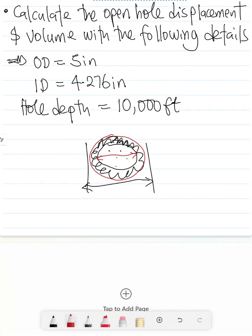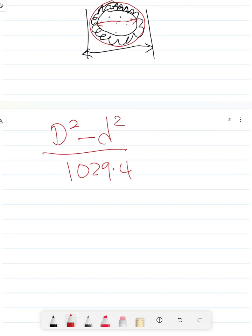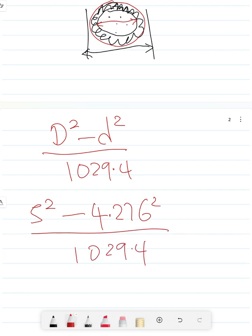Looking at the example we have, to calculate the open hole displacement it's going to be D² - d² all over 1029.4. The example says 5 inch pipe, so 5² - 4.276² all over 1029.4. The open-end displacement is going to be 0.006524.